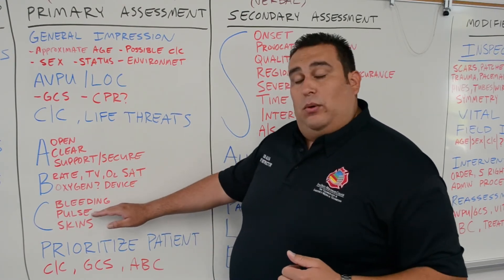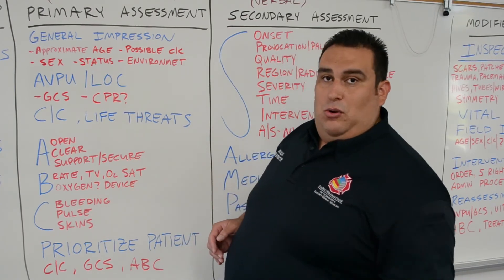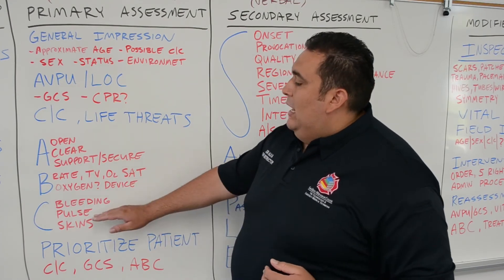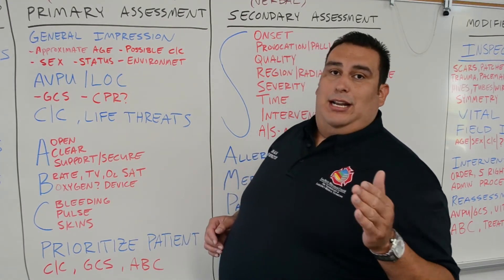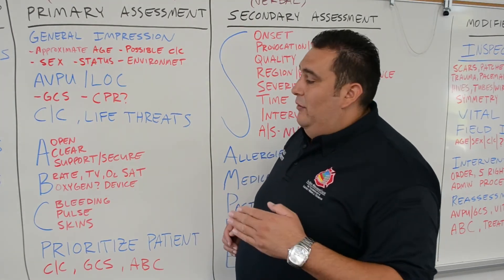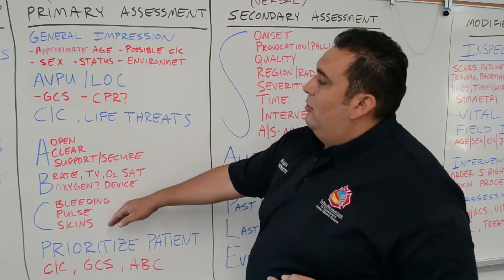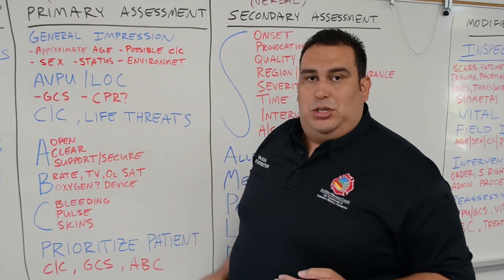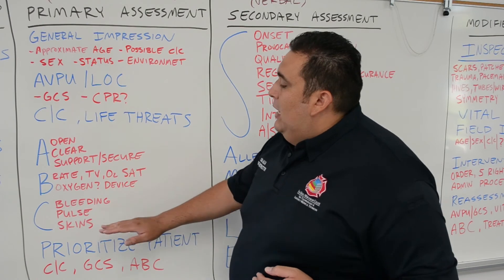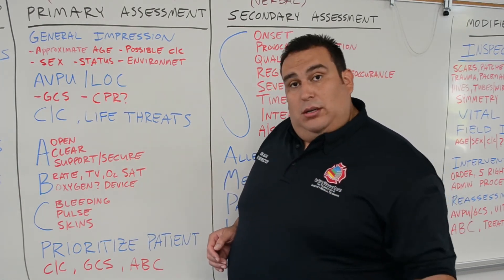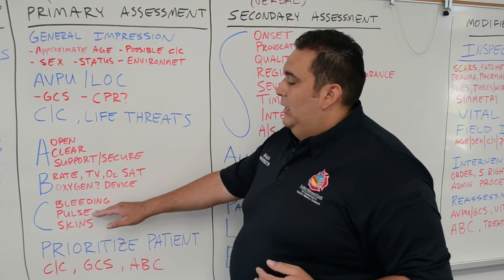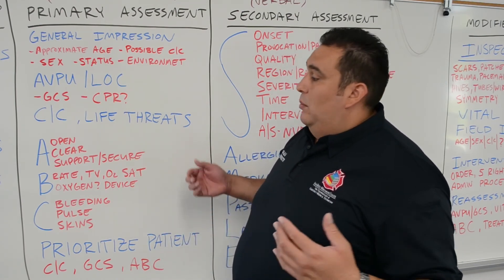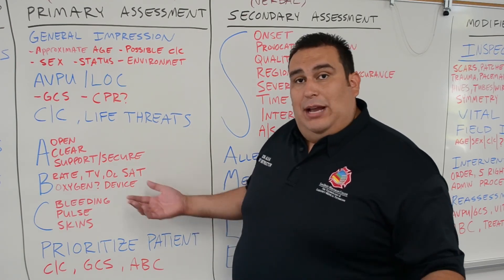For pulse rate, assess whether it's fast, slow, or within a normal range — don't assess an actual number. For rhythm, is it regular or irregular? An irregular rhythm would make sense for a patient with chest pain identified in the general impression. For quality, is it strong or weak? A weak pulse could imply poor perfusion and poor circulation.